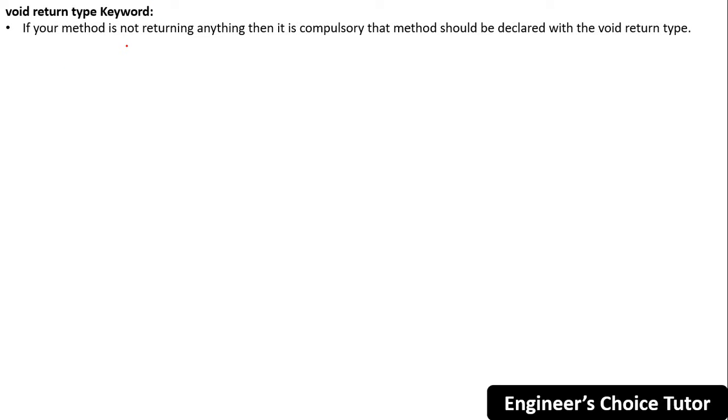Next is the void return type keyword. If your method is not returning anything, then it is compulsory that the method should be declared with the void return type. For that we use the void keyword.